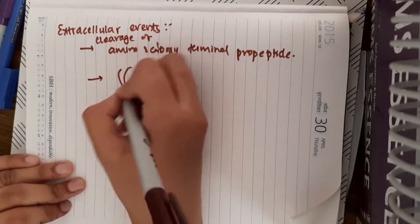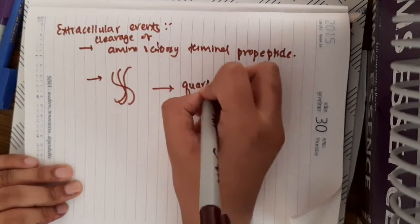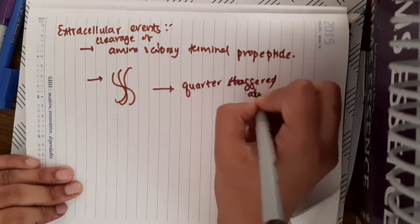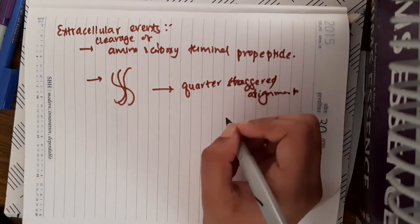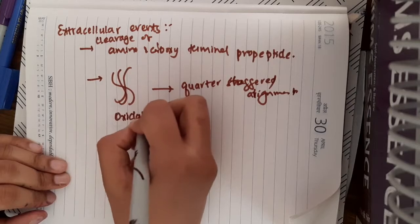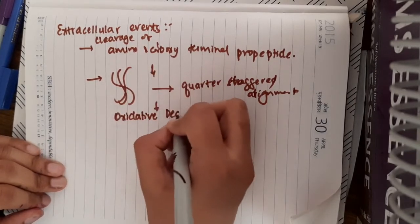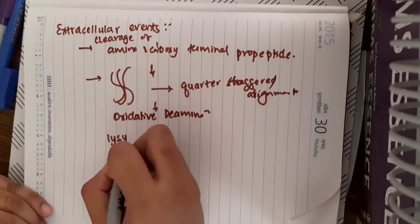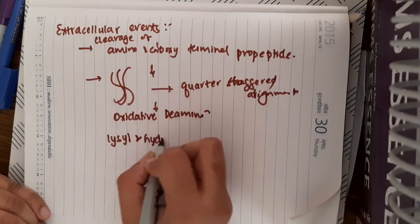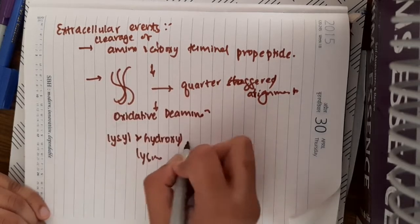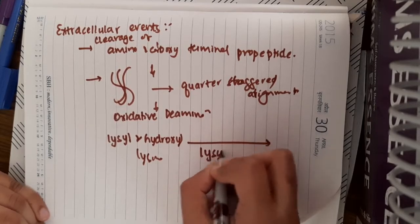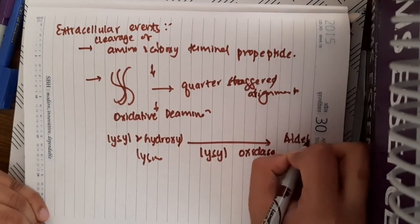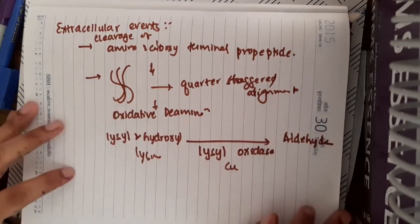Then the triple helix structure will now form an arrangement of quarter staggered arrangement. And then there is also oxidative deamination which will occur. In oxidative deamination of mainly lysyl residues, lysyl and hydroxylysyl will undergo oxidative deamination in the presence of lysyl oxidase, and it forms aldehydes. This occurs in the presence of copper.